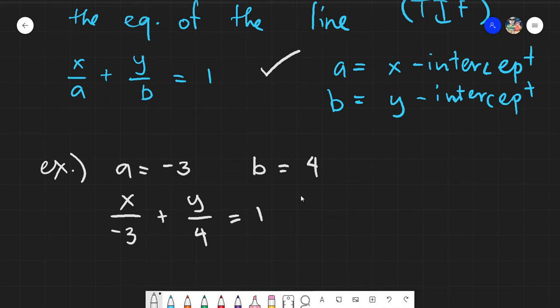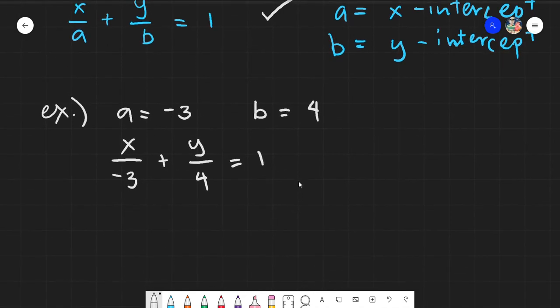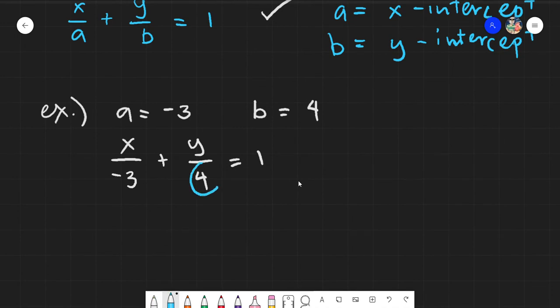So if we have this, what would happen here is we just simply need to cross multiply. The denominator 4 will go up here, and as for the x, the negative 3 will go up here. And lastly, this negative 3 and this negative 4, you will multiply them together and multiply it to the number on the right side.